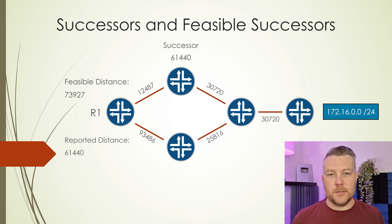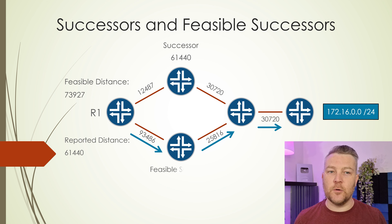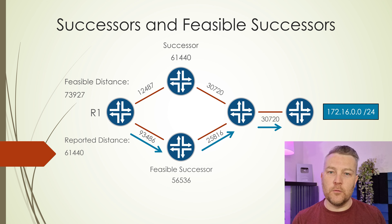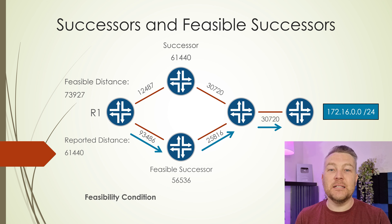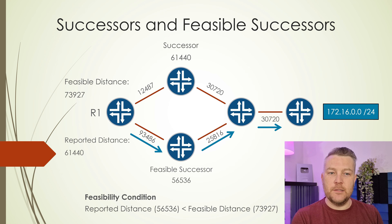Now there are often multiple paths through to a destination. The next best path to the destination is called the feasible successor — it is a backup path and it is already guaranteed to be loop-free. To be a valid feasible successor, we need to meet the feasibility condition: the reported distance must be less than the feasible distance. The point behind this is to make sure that the backup path is not introducing a loop into the network if it were to become active suddenly.